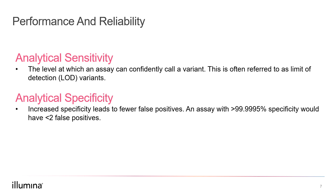Tumor cells will only represent a small portion of a sample, so the variants and transcripts associated with these cells may only be present at low frequencies, also known as variant allele frequencies or VAFs. An assay must be able to detect variant allele frequencies in these low ranges — we term this the level of detection, which is the lowest frequency of variant it can confidently detect. Typically, a solid tumor panel will shoot for a level of detection of 5%, while a liquid biopsy panel will try to attain a level of detection of around 0.5 to 1%.